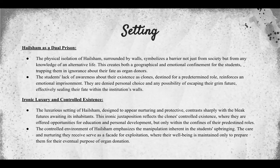First, we're going to be talking about the grotesque setting of Hailsham. Hailsham represents a dual prison because it isolates students both physically and mentally. The physical isolation is symbolized by its really tall walls, which create a barrier not just from sight but from knowledge of an alternative life. The clones don't know what they're missing — it's like they're geographically in the middle of nowhere, far from society.